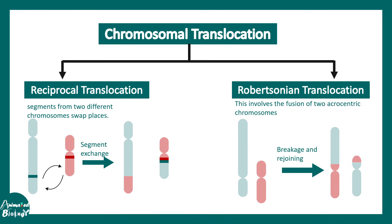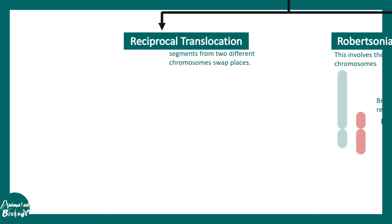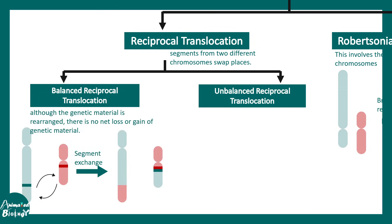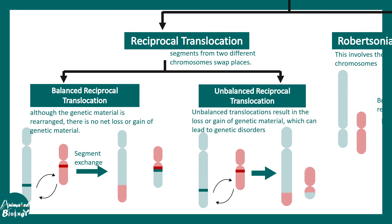Now let's talk about reciprocal translocation in a bit more detail. There are two subcategories of reciprocal translocation: balanced and unbalanced. In balanced translocation, no net gain or loss of genetic material takes place. In unbalanced translocation, a portion of the chromosome might be lost or duplicated, so there is a change in the overall genetic content.